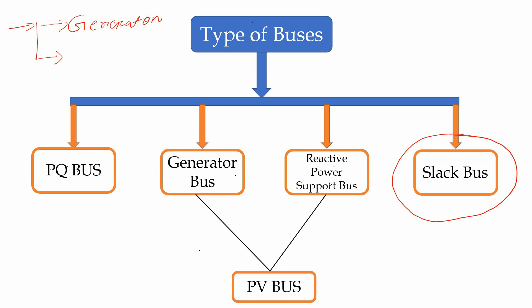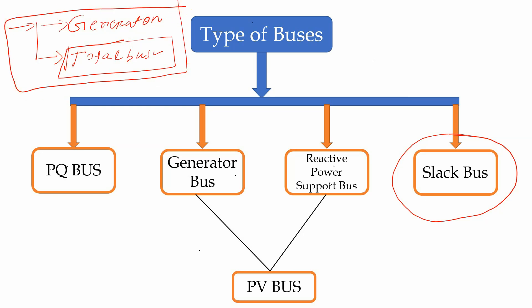If the generator bus is not specifically mentioned in the question, or the number of generator buses cannot be determined specifically, then you have no other option — you have to select the slack bus from the total number of buses. To understand when generator bus is mentioned, you need to learn the concept of PV buses. PV buses actually consist of two types: generator buses and reactive power support buses.